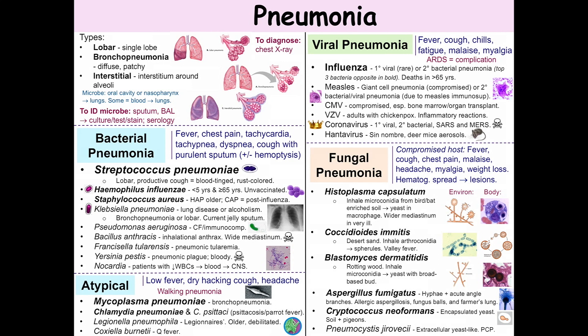Coxiella burnetii causes Q fever. This is caused by inhaling dust or aerosols from farm animals, typically sheep — particularly pregnant sheep. Q fever causes an atypical community-acquired pneumonia. However, the liver may also be affected, so the patient can also have hepatitis.